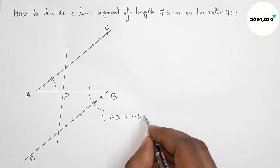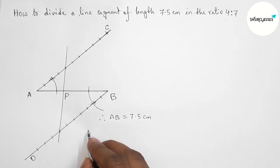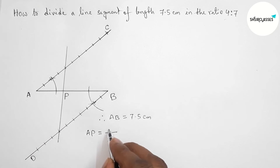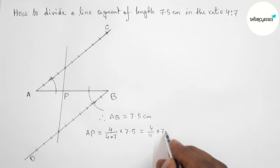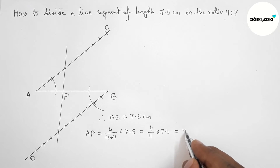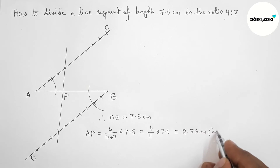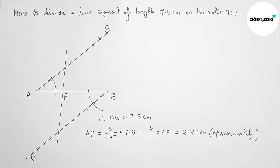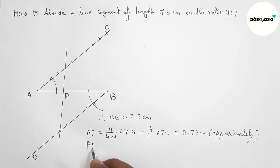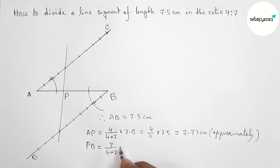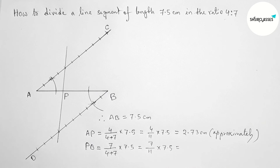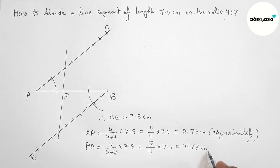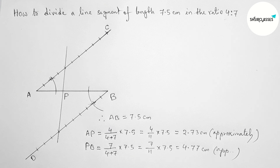AB is 7.5 centimeters. Finding the length of AP: AP = (4/11) × 7.5, which is approximately 2.73 centimeters. You can check this at home. Finding the length of PB: PB = (7/11) × 7.5, which is approximately 4.77 centimeters. That's all — by this method you can divide a line segment in the ratio 4 is to 7.